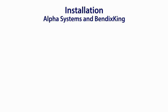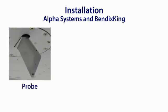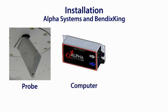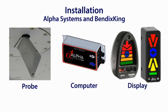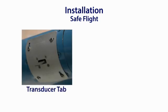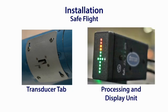The Alpha Systems and Bendix King devices utilize a three-part system: a probe that attaches to an inspection panel on the bottom of the aircraft's wing or fuselage, a computer to process inputs from the probe placed out of sight usually in the cockpit, and the display unit. Installation is simple for aircraft with inspection panels. For aircraft without inspection panels or that are made of fabric, installation is more complicated but not impossible. The Safe Flight device utilizes a two-part system: a transducer tab installed on the leading edge of the wing, and the processing and display unit placed in the cockpit. The transducer tab needs to be positioned on the leading edge of the wing and requires a hole cut in the wing, which becomes difficult but not impossible on composite aircraft.